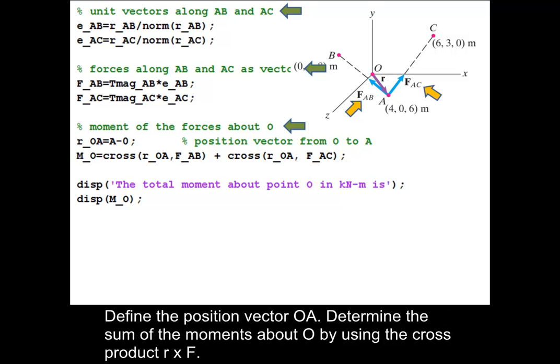Define the position vector OA. Determine the sum of the moments about O by using the cross product of R and F.